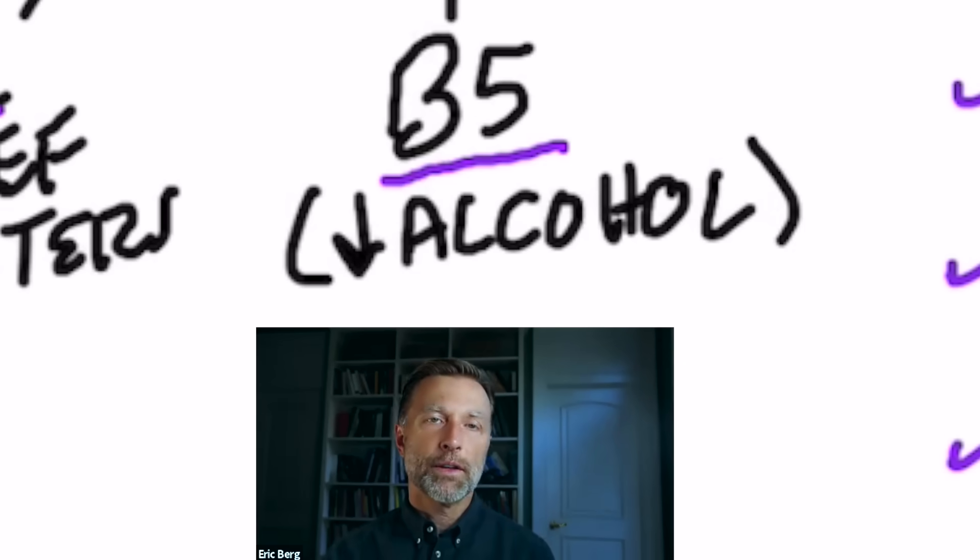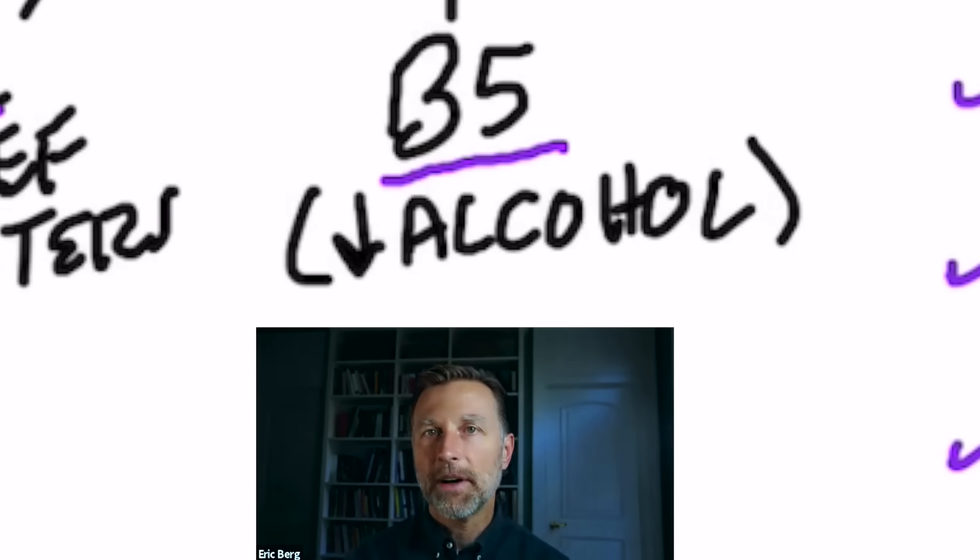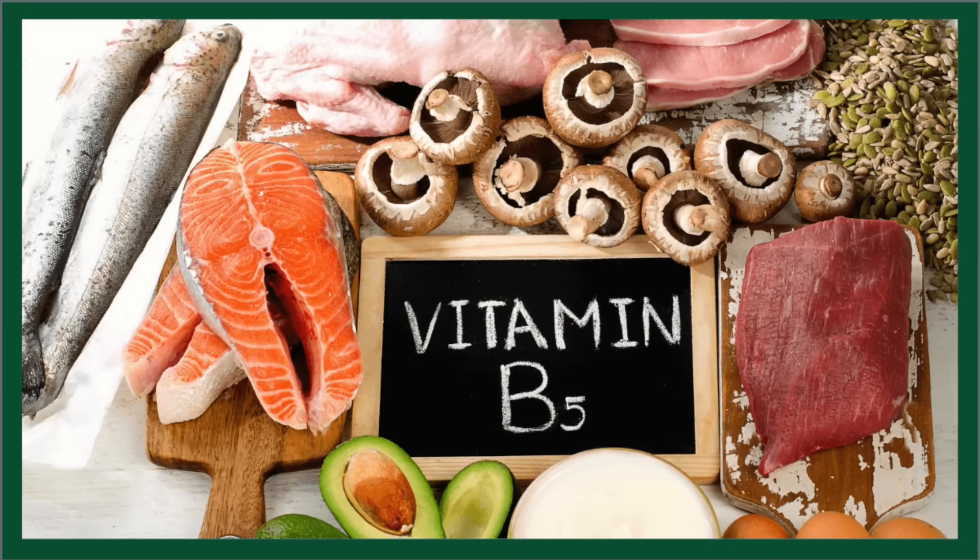Acetylcholine also needs helper molecules to allow it to be produced or synthesized. One helper molecule is vitamin B5. And it's very easy to get vitamin B5 from just eating pretty much any food. But here's the thing about B5.